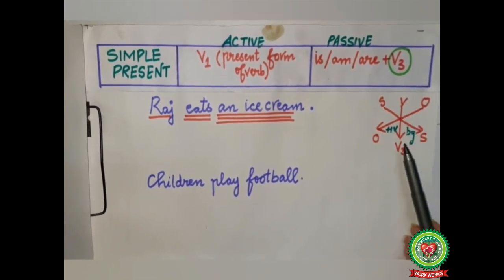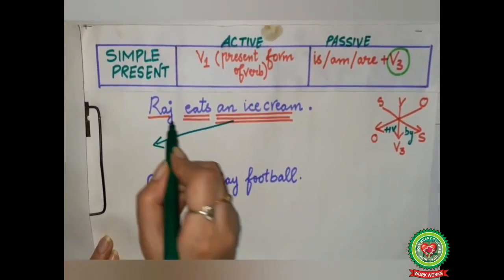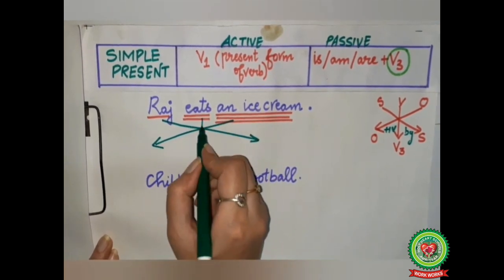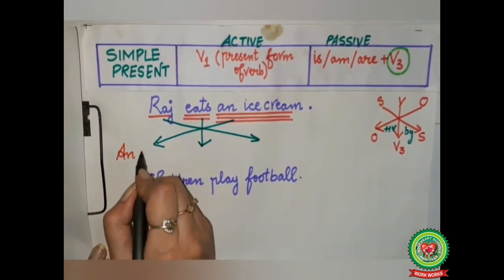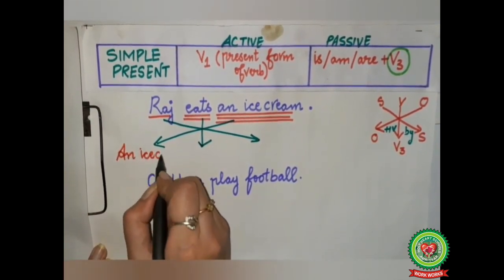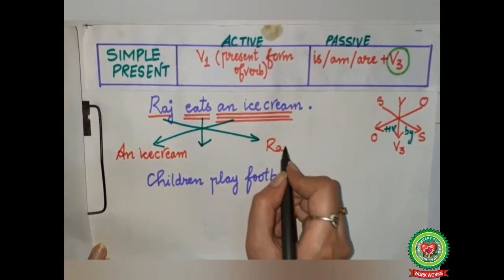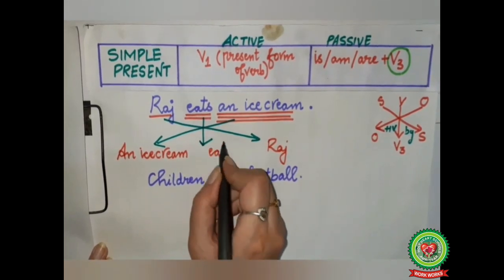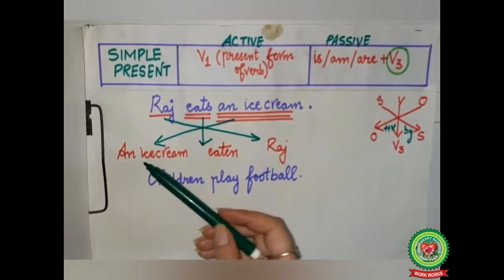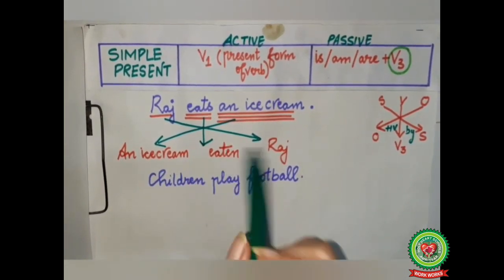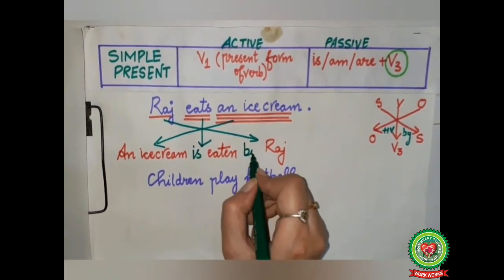'An ice cream' will come in the beginning, 'Raj' will go to the end, and 'eats' will change into 'eaten.' Now 'eats' is your present form of verb, so for 'ice cream' we will use 'is.' The sentence will become: 'An ice cream is eaten by Raj.' Full stop.